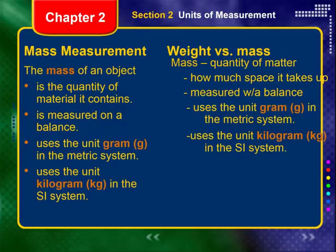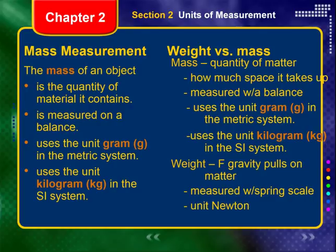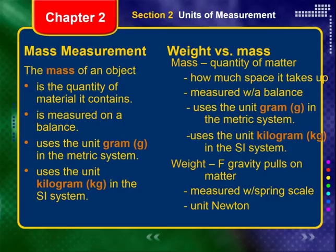Let's distinguish between mass and weight. Mass is a quantity of matter — anything that takes up space has mass. You measure it with a balance using grams or kilograms. Weight is the force of gravity pulling on that matter. When gravity accelerates that matter toward the center of mass, that is called weight. We measure weight with a spring scale, using the Newton as the unit.